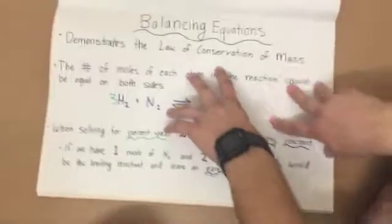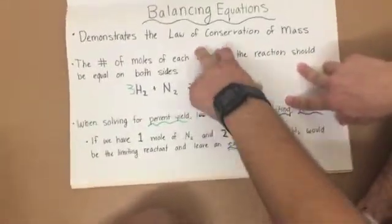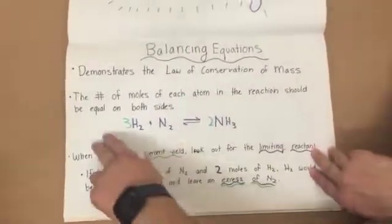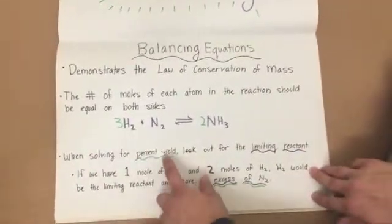The most fundamental part of any chemical reaction is balancing the equation. Balancing the equation demonstrates the law of conservation of mass. The number of moles of each atom in the reaction should be equal on both sides.